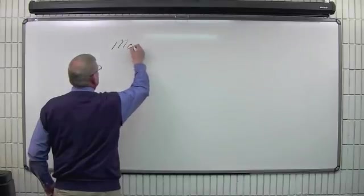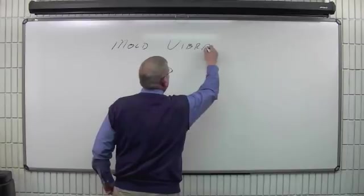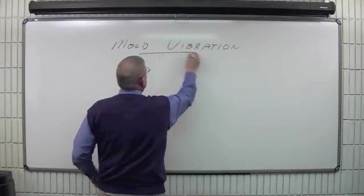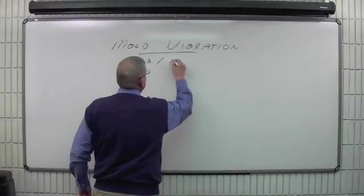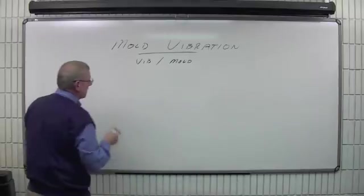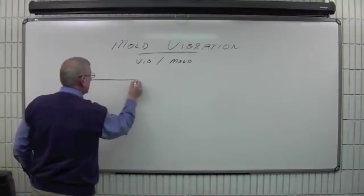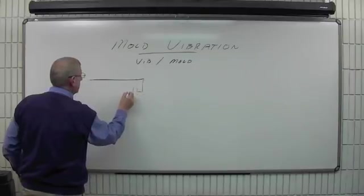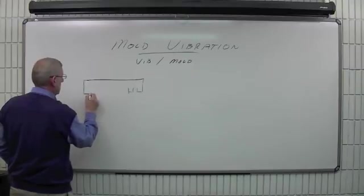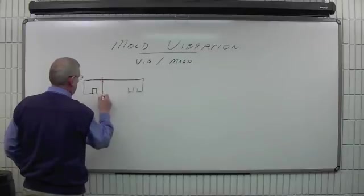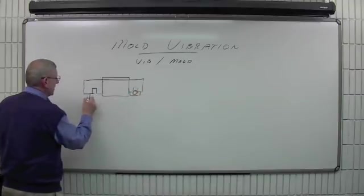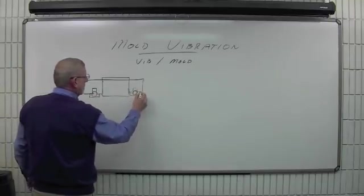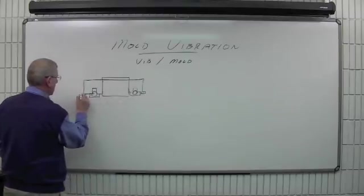The first system we'll look at is mold vibration, and this will be the style of vibration where the vibrators will be attached directly to the mold. So we have a mold here, and we'll just make a rough drawing of the mold. On the bottom here, this is where the vibrators would be mounted, and the mold would rest on these corners in the machine at rest.